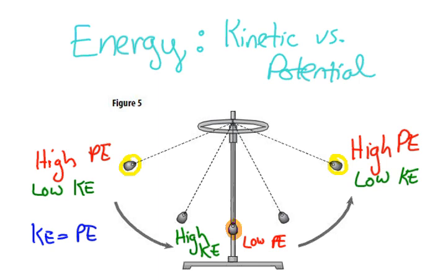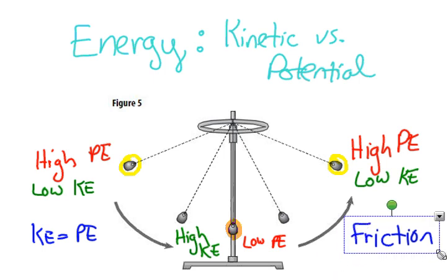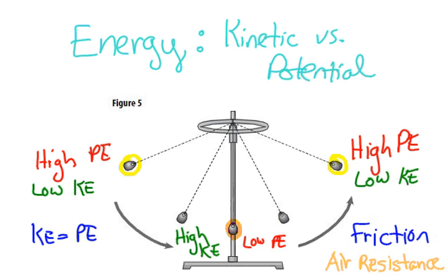However, we do know that eventually the bob will stop moving back and forth due to friction. To be more specific, the type of friction we're talking about is air resistance, and also friction right where the bob is attached to the particular anchor — in this case, on the ring stand.